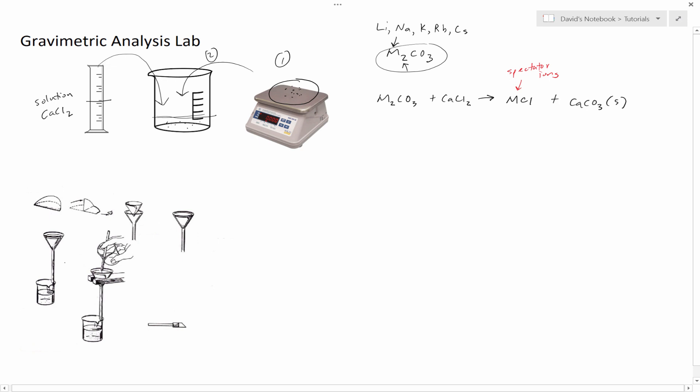We're going to set up our filter in our funnel. We're going to use a filter paper, put this in our funnel, and then this beaker will be this beaker here. What they're using right here is a glass stir rod to help aid the transfer of the calcium carbonate into this.